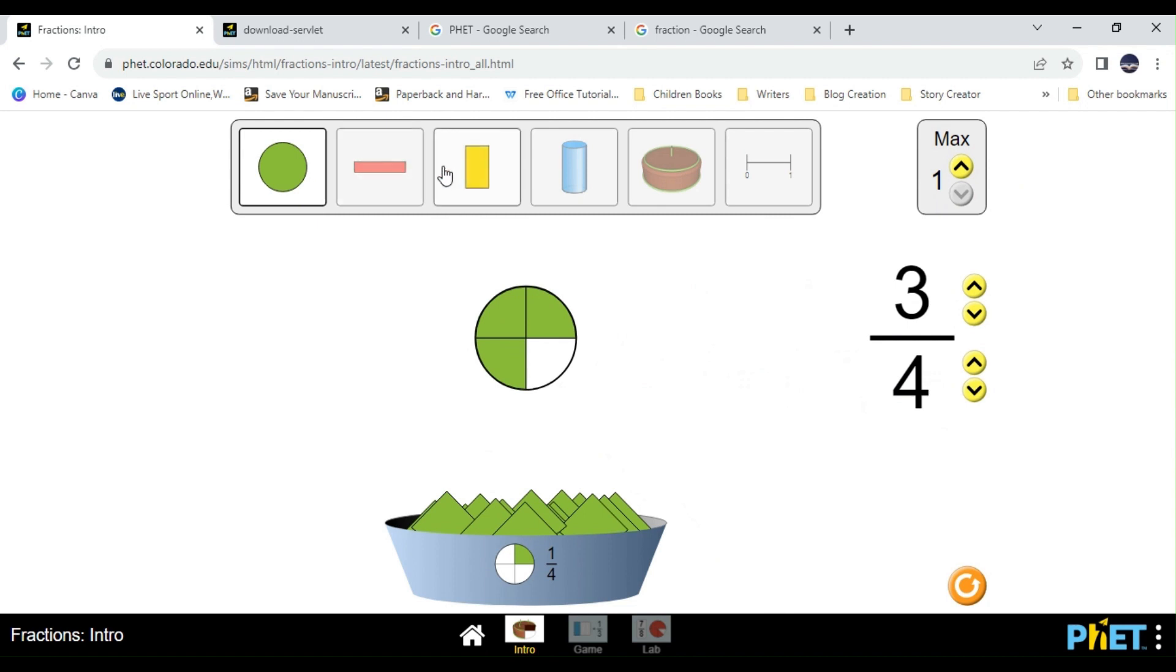I can change it to this. Again, the same thing. So we have one, two, three parts selected, which is three. And we have four parts in all, which is the total number of parts is four, which is the denominator.